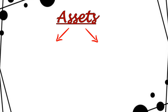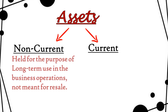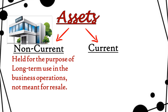Assets are divided into two categories: non-current assets and current assets. Non-current assets are those which are not purchased for resale purposes, but for long-term use in the business. For example, if you purchase a building, furniture, or machinery — you are not purchasing them to resell, but to use long-term in the business.